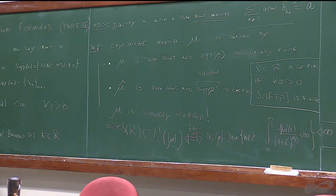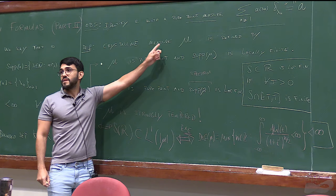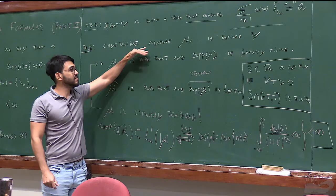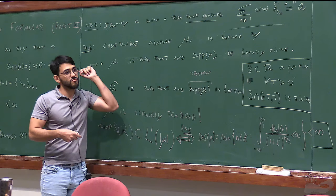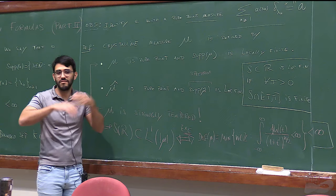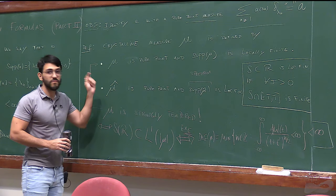If you go to the literature you will see that crystalline measure business is complicated because the authors call this quasi-crystal, others call it Fourier quasi-crystal, others call it doubly sparse, and so on. There is no agreement on the definition, and it changes if you change decay conditions. It's a bit of a mess, but this is the definition of Yves Meyer, and I'll keep this.